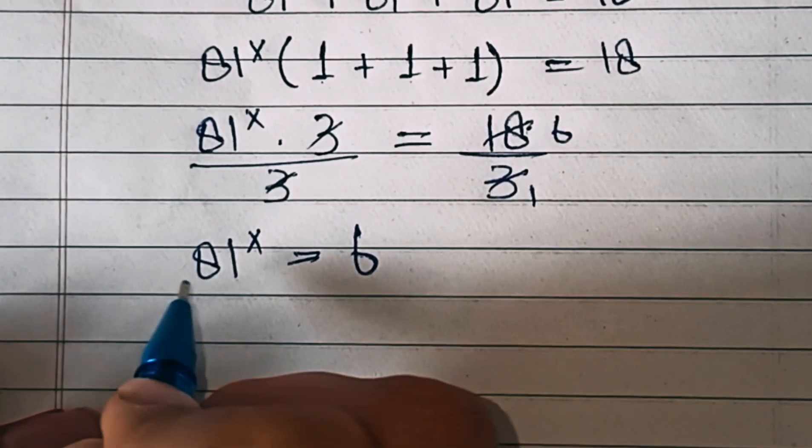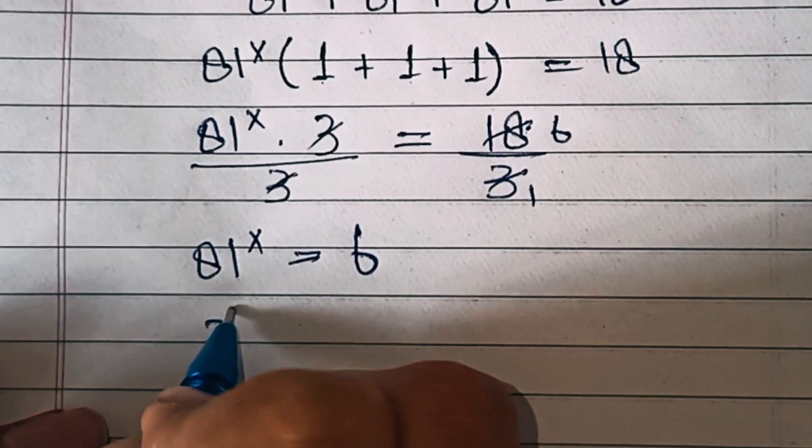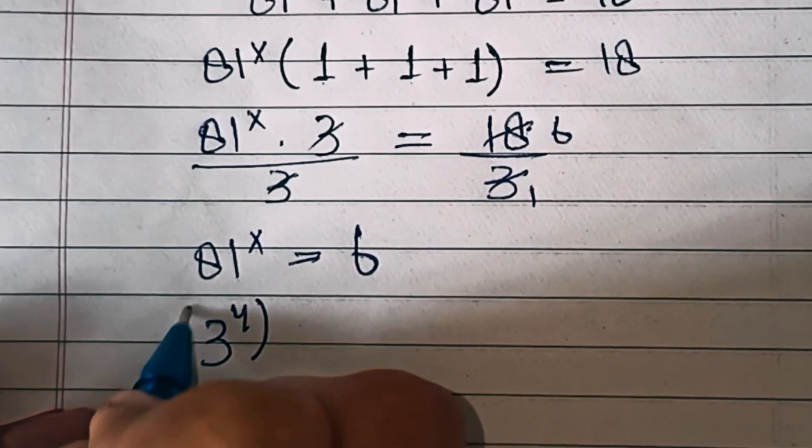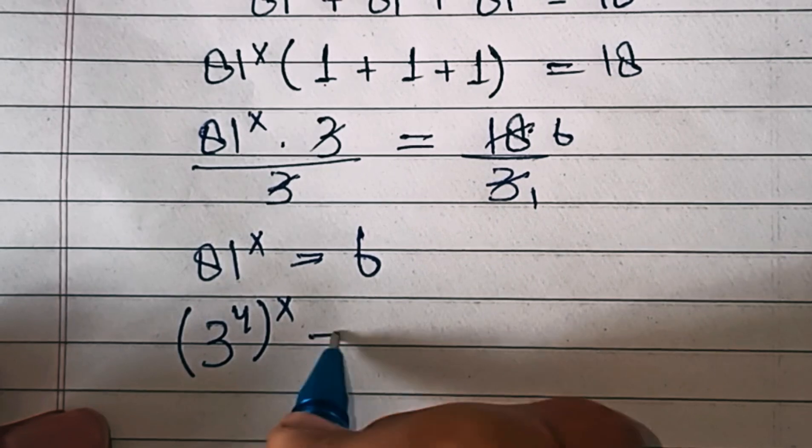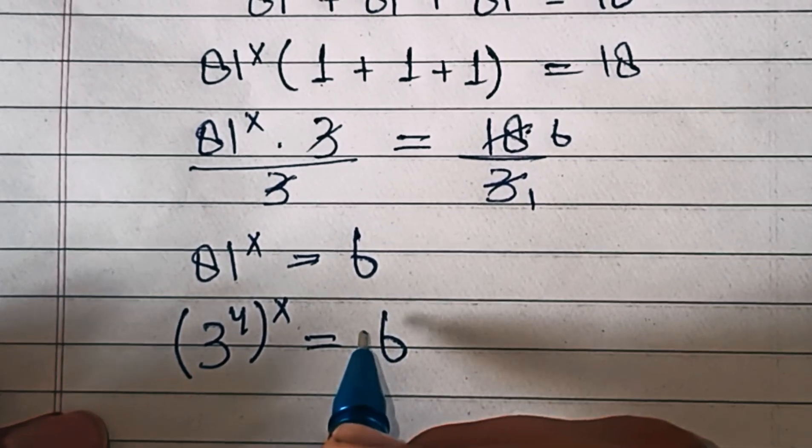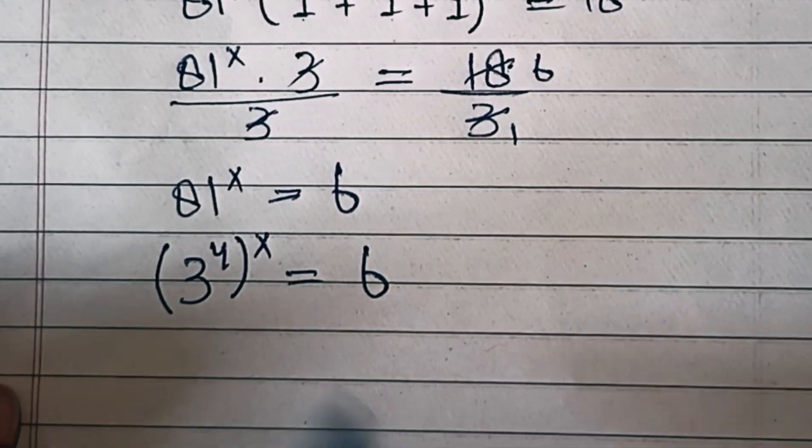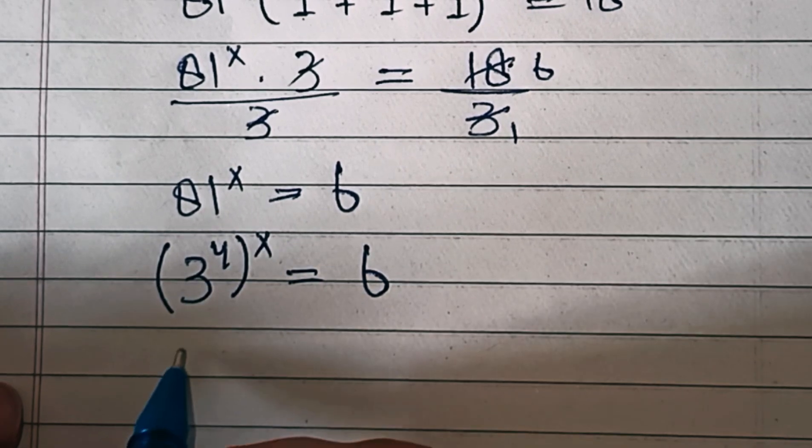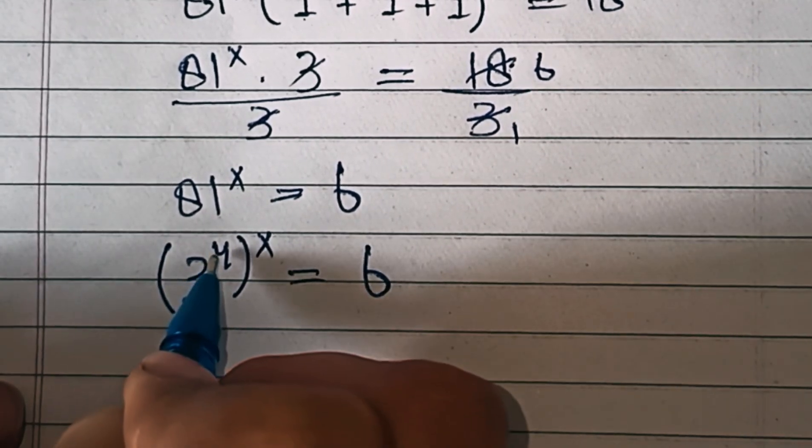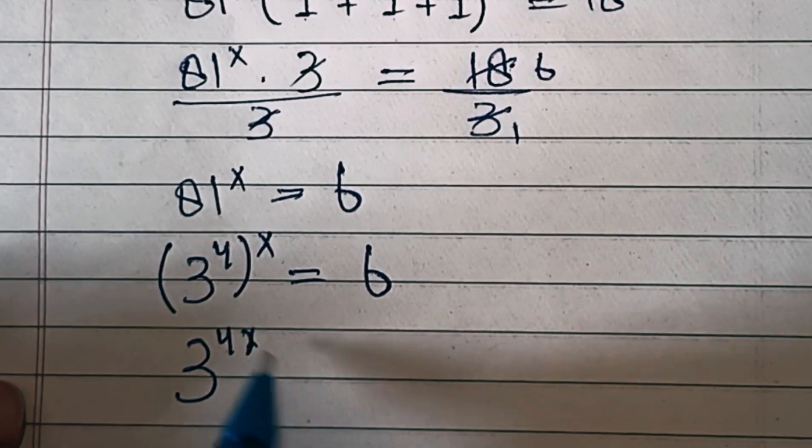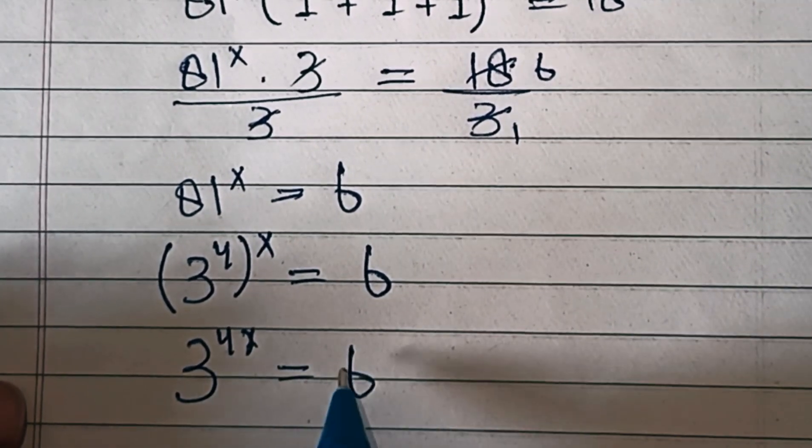We can write 81 as 3 power 4 in bracket, power x, equals 6. Opening the bracket, this is 3 to the power of 4x equals 6.